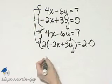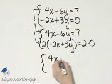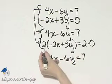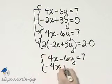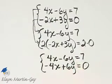Here's my equivalent system. Let's continue. I'll simply rewrite the first equation again. And now let's multiply. 2 times negative 2, that's negative 4x, plus 6y is equal to 2 times 0 or 0.